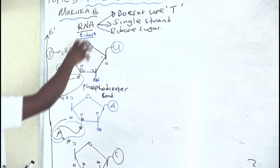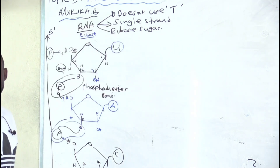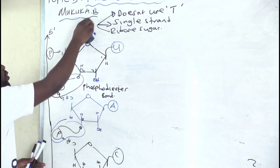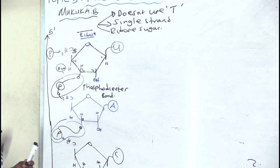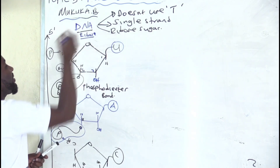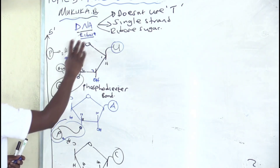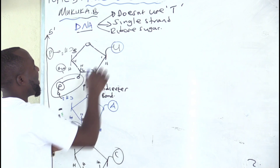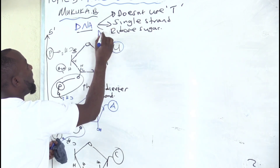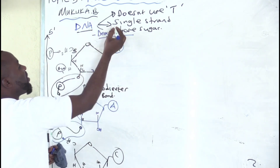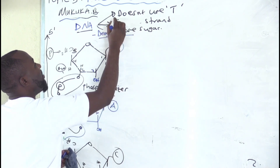How can you transform this RNA into DNA? How does it differ from the synthesis of DNA? The name of the sugar will change — instead of a ribose sugar, it will be a deoxyribose sugar. Instead of being a single strand, it will now be a double-stranded structure.